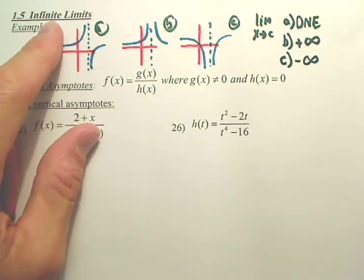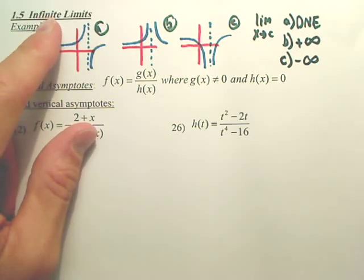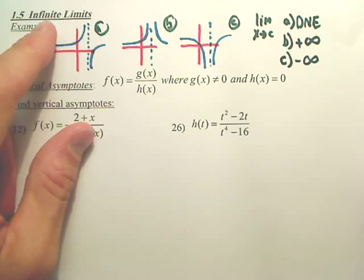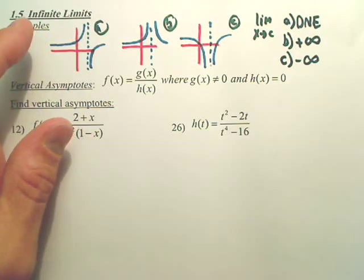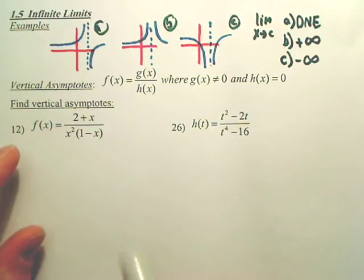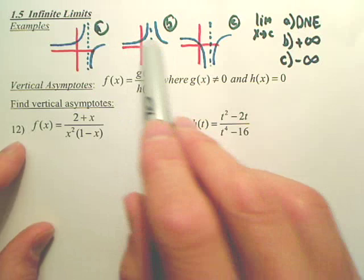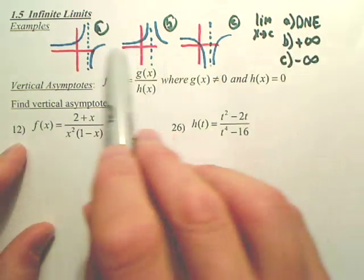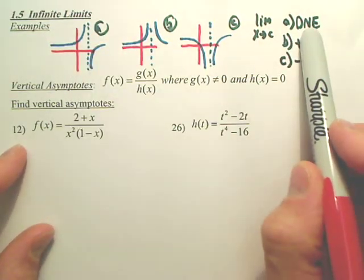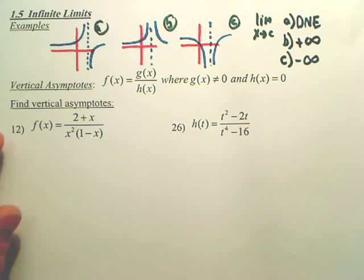Infinite limits are basically a description of what the graph is doing. Even though the limit does not exist, it describes it, gives you more info than just saying it doesn't exist. So if they both go to the same direction, give it an answer. If they go in opposite directions, it doesn't exist. DNE does not exist.